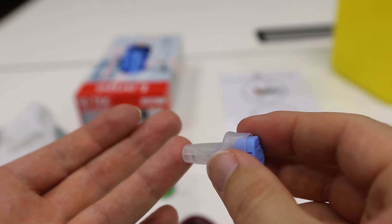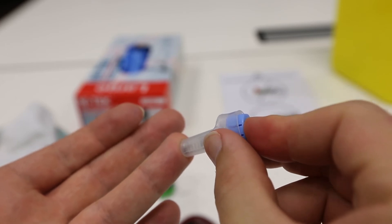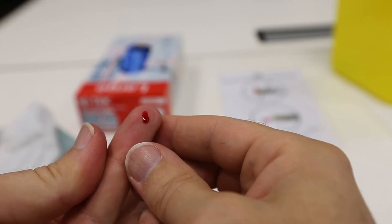To use the lancet, press it gently against your skin and press the button. Squeezing your finger gently will encourage the blood to come to the surface.